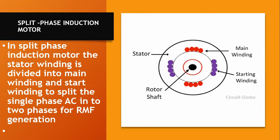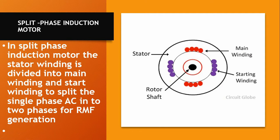As you can see in this picture, this is a rotor of a split phase induction motor. We can describe the internal construction of a split phase induction motor like this: the stator winding is divided into main winding and starter winding, to split the single phase AC into two phases for rotating magnetic field (RMF) generation. Here you can see there is a main winding and a starter winding, which helps us split the single phase AC into two phases.